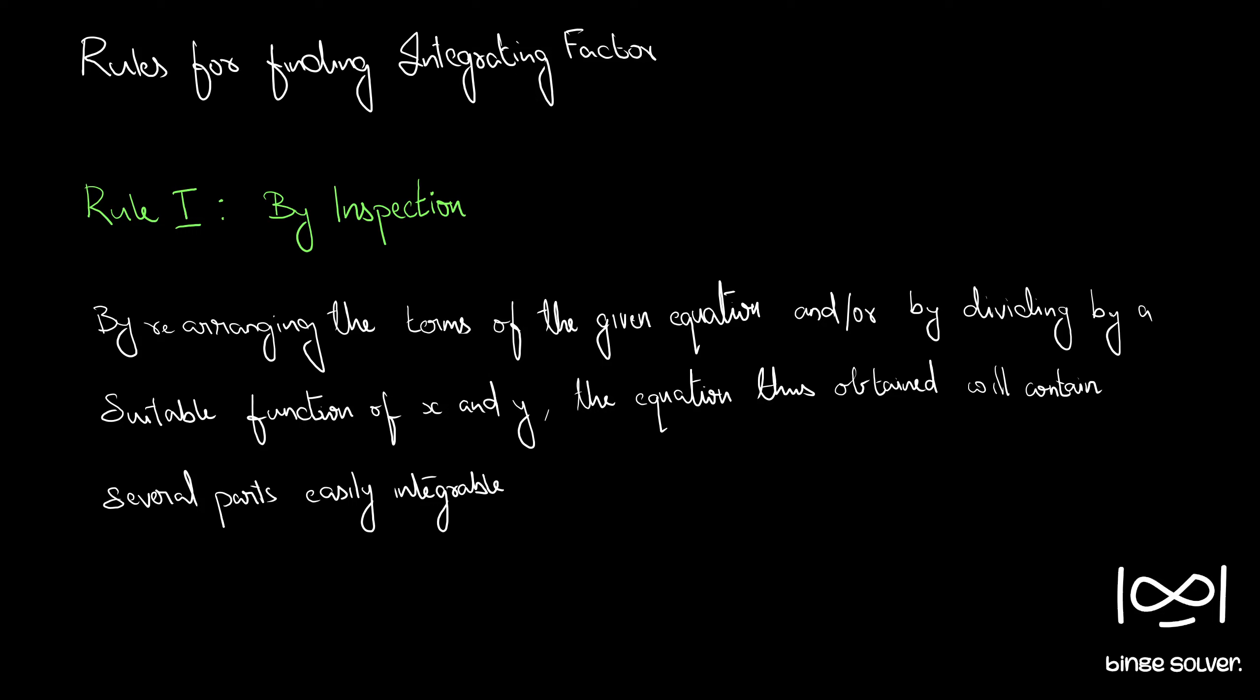There are many rules to find the integrating factor for a given equation. We will take the first rule, use that to solve some questions, and then take the next rule. The first rule is by inspection. By inspection means by rearranging the terms of the given equation or by dividing by suitable functions of x and y, the equation thus obtained will contain several parts easily integrable.